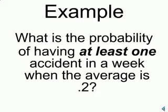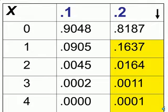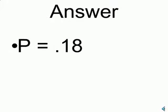What is the probability of at least one accident in a week when the average is 0.2? Well, here we are going to be looking at the same column, the 0.2 column, but now we will add together all the frequencies representing one accident and more than one accident. In other words, two, three, or four accidents. We add those numbers together to get our answer. And the answer is 0.18.